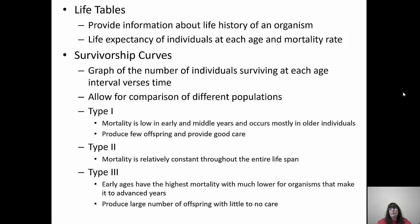In type one survivorship, individuals produce few offspring but provide excellent care for them. Humans have a type one survivorship curve. Type two has relatively constant mortality throughout the entire lifespan — rodents often have this type. Type three has the highest mortality in early ages, so very few organisms actually make it to older age. They produce a large number of offspring so they have the best chance of reproducing, and they do not give their offspring very much care at all. It's about producing the most offspring with the least care for the highest efficiency, because they won't be around for very long.